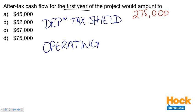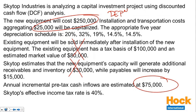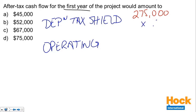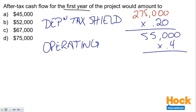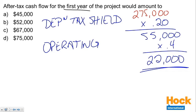Tax depreciation expense is a deductible expense — it reduces our taxable income. So we multiply year one tax depreciation by 40%, and that becomes a cash inflow for year one. Year one depreciation is 20% of $275,000, which equals $55,000. Multiplying by the tax rate of 40% gives a cash inflow for the tax depreciation shield of $22,000. Nobody is paying us this money directly — it's a reduction of cash outflows connected to taxes.